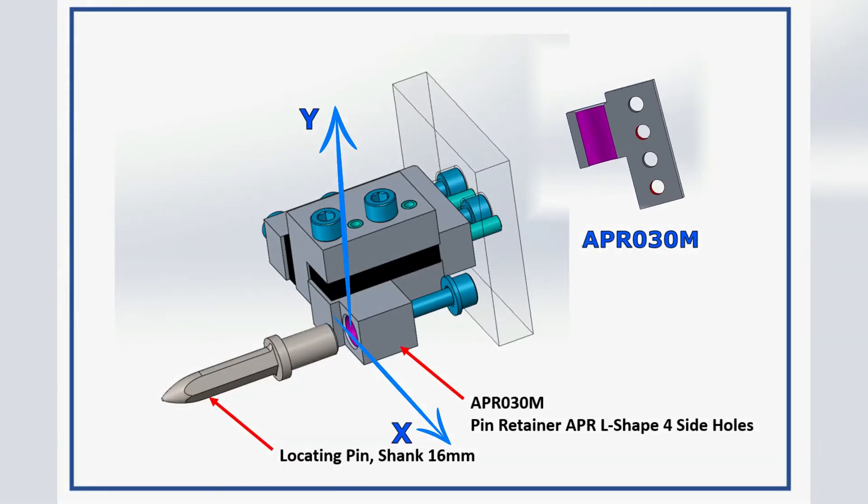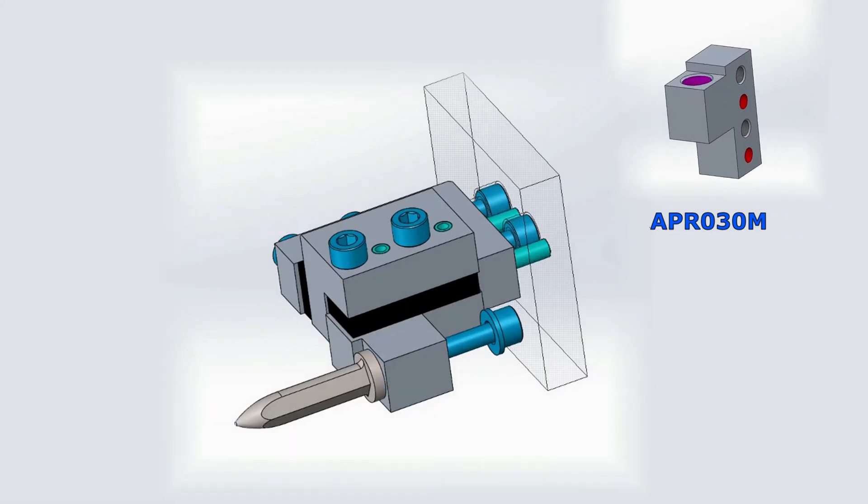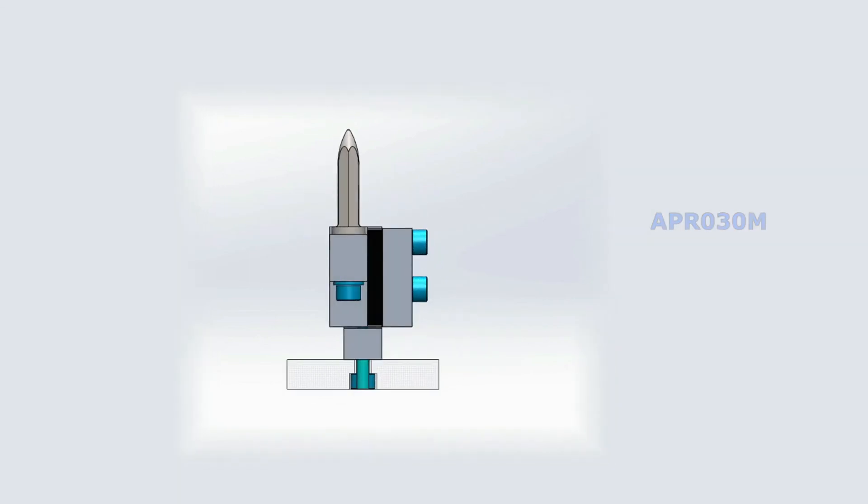Today we will review assembly code 1N, 4-way adjustable assembly, X and Y direction. The locating pin is mounted in the pin retainer, APR-L shape, 4 side holes, APR-03-OM. The locating shank is 16mm.